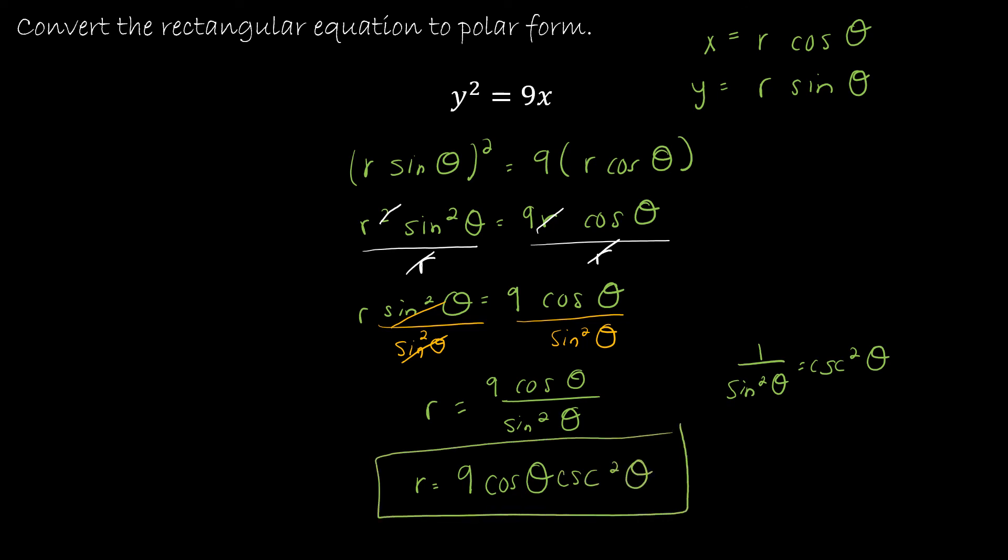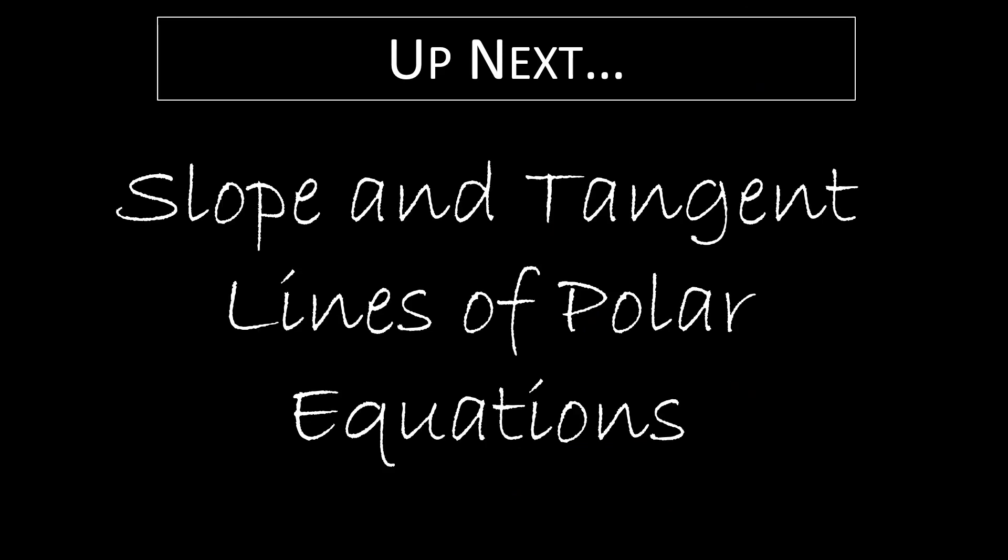Now, if I were asked to graph this, obviously, the easiest way to graph this is to graph this in rectangular form. So this should just be a parabola that's obviously turned on its side because the y is squared and not the x. So we're not going to go through that graph. I'm going to assume that you can do that. Let's move on to our very last video of calculus 2, which is to find the slope and tangent lines of polar equations.